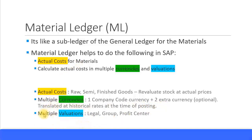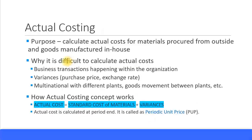The material ledger also calculates at multiple valuations. You have your legal valuation, which is like your company code valuation and can be in one currency. Then you can have a group valuation in a different currency, and you can also have a profit center valuation. So the material ledger can calculate at multiple valuations.